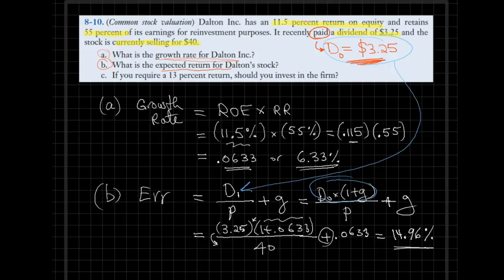Now the last part of the problem. We are told that the required rate of return of the investor is 13%. Should the investors buy this stock? Well, because the expected rate of return of almost 15% exceeds the 13% required rate, we can confidently say in part C that the decision is buy.